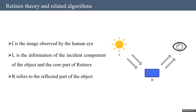Now I will introduce the Retinex Theory and related algorithms. The Retinex Theory, also called the Retinal Cortex Theory, decomposes a given image into illumination and reflection components. Here, I represents the image observed by the human eye, L is the illumination component of the object, and R refers to the reflected part of the object. Since the logarithmic form is close to the properties of luminance perception, it is usually transferred to the logarithmic domain for solution, which also transforms complex multiplication into addition and subtraction.